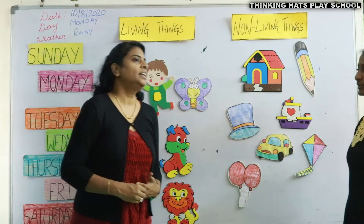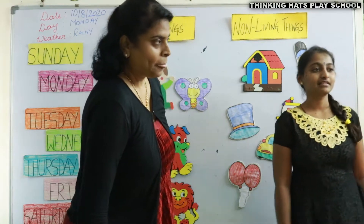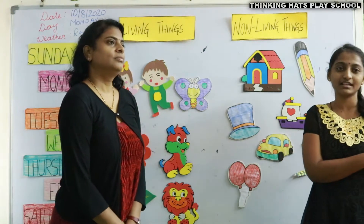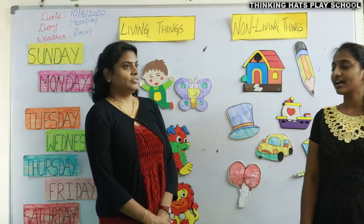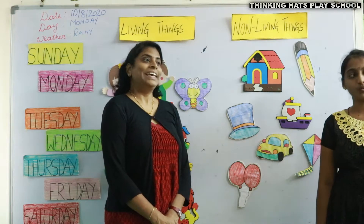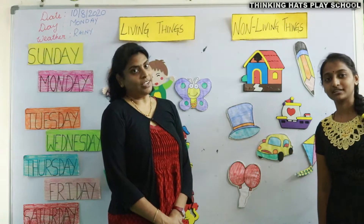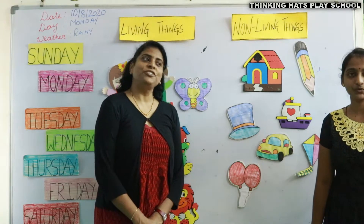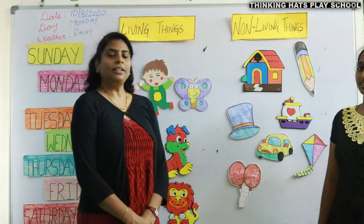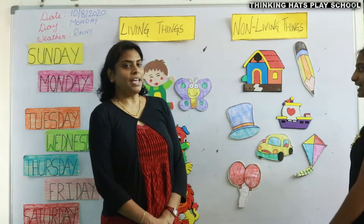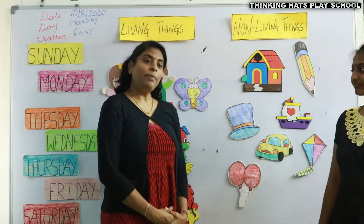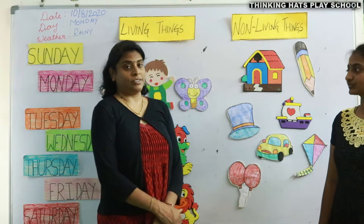Jyoti, can you tell me what are living things? Living things are things that have life. So living things move, grow, eat and drink, and reproduce. Examples of living things are people, plants and animals. People can move, animals can move, and plants give many things to us.